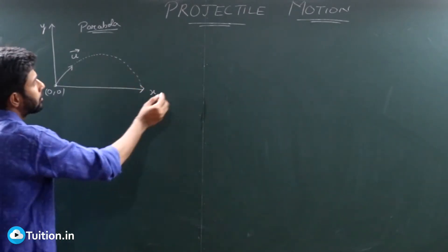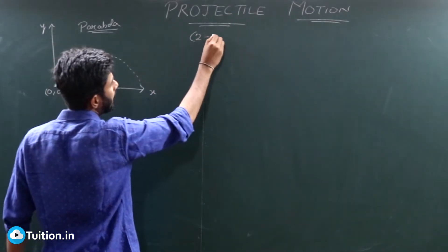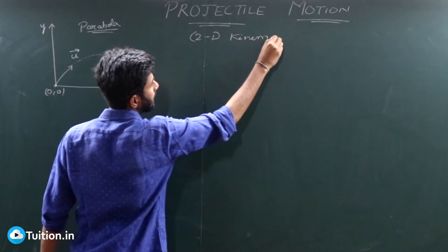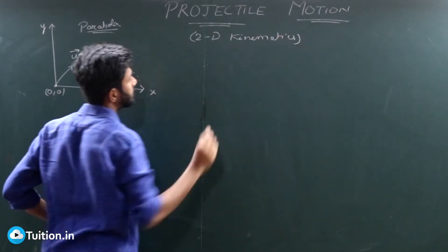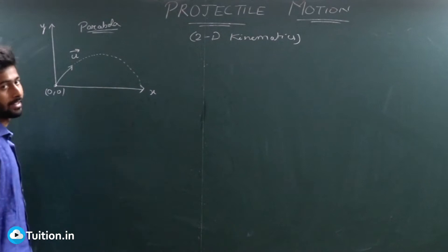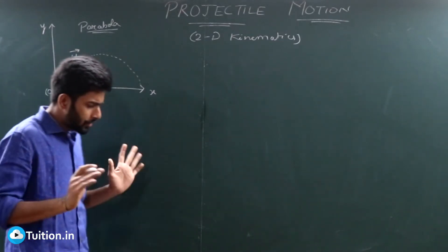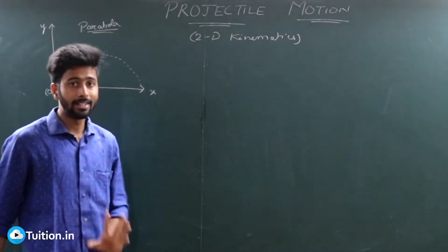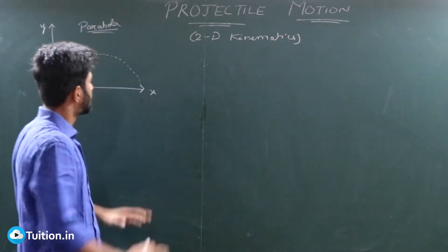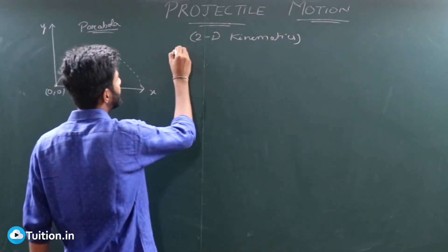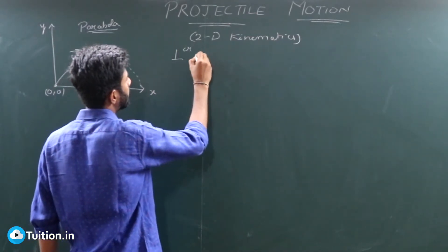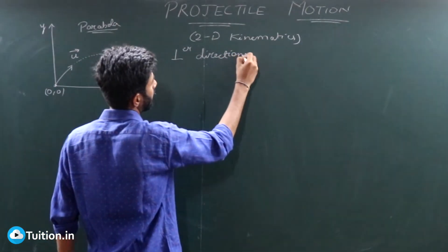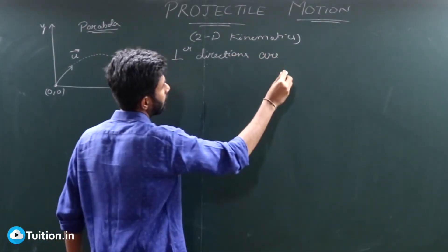Projectile motion is nothing but 2D kinematics. It is 2D kinematics because it deals with two dimensions: the x-axis and the y-axis. If I were to state everything that happens in this particular motion in one line — the gist of this entire thing — I would state it as: perpendicular directions are independent.